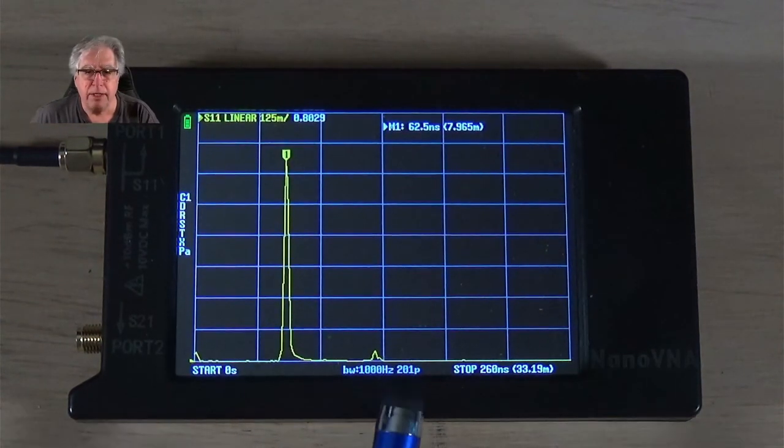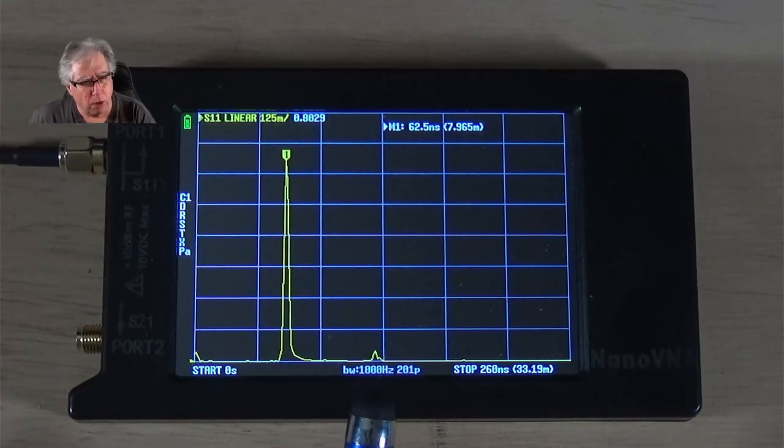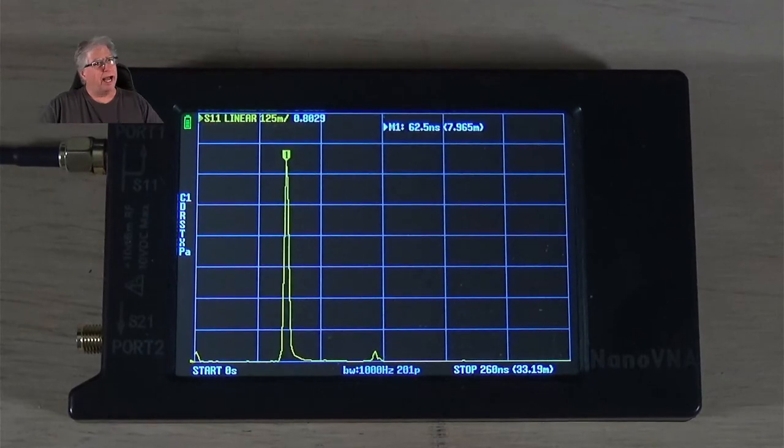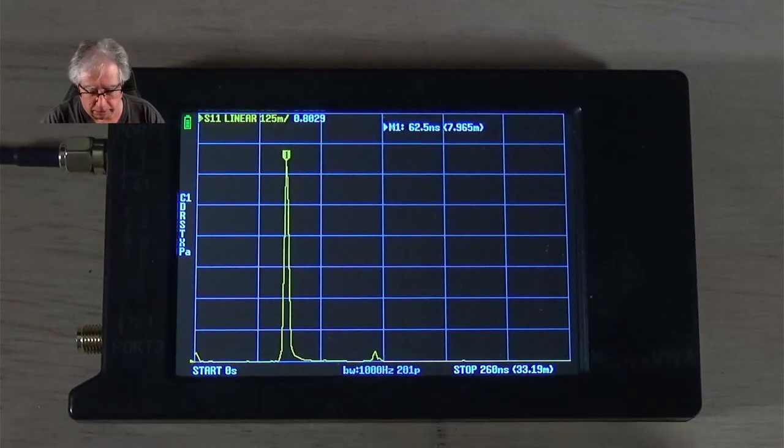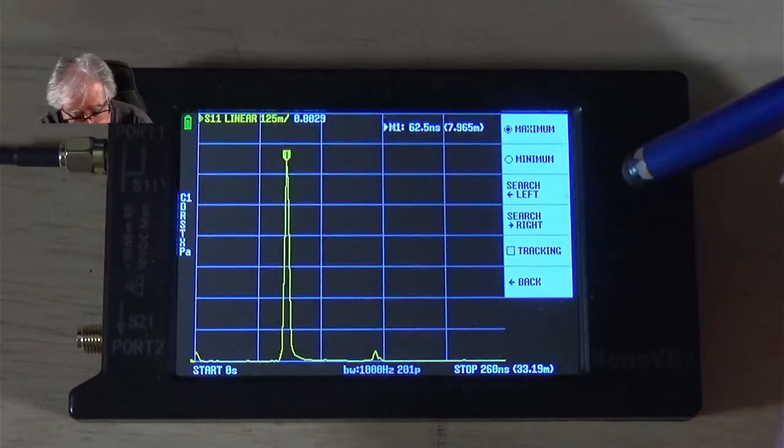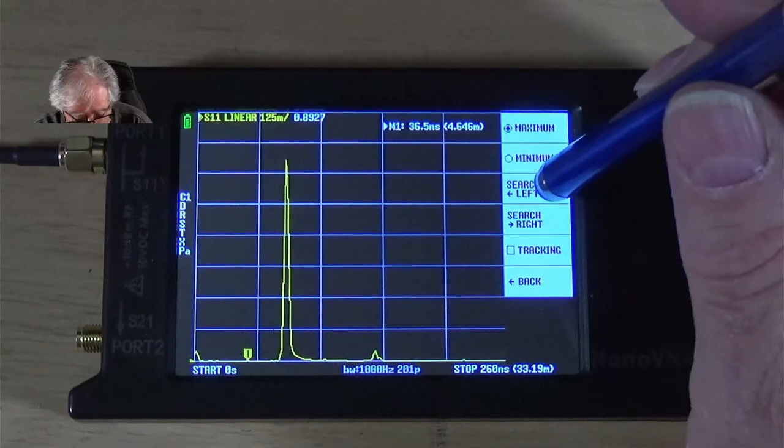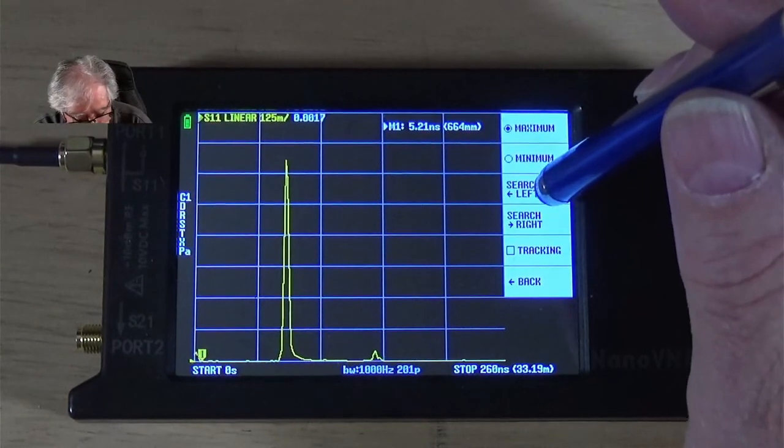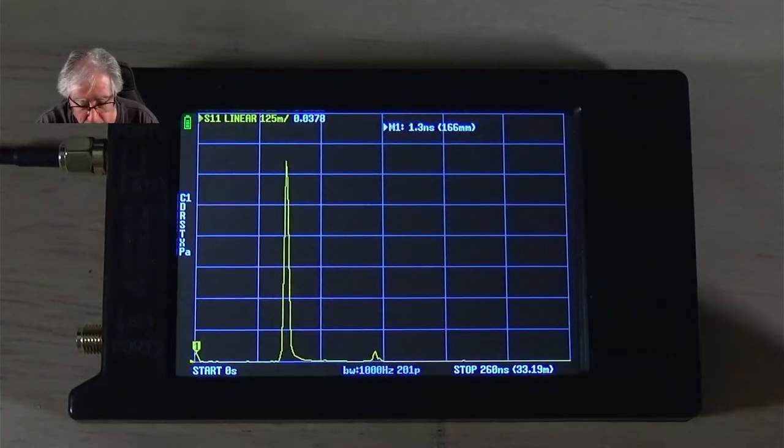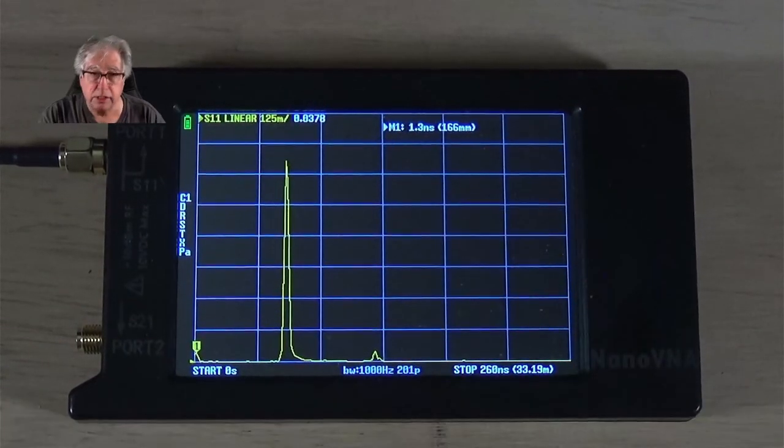Well, maybe in a future video, I'll do some tests to try to show that, but for the most part, if I understand the way this is looking, I should actually be able to see connectors, right? So, here, if I go search left a few times, I should get back to that first big one, right? There. And if I take a look at the distance there, it's 166 millimeters.